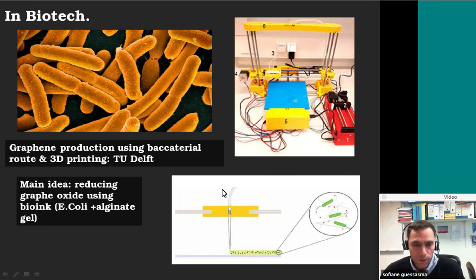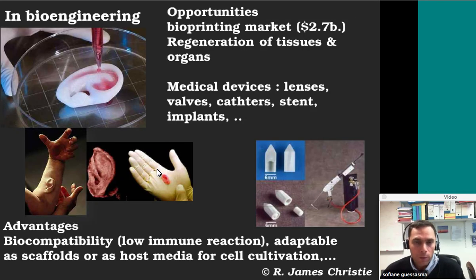It's also used for biotech. This is an example coming from TU Delft, where researchers used bacteria to manufacture graphene using a bio-ink, which is a combination of E. coli and alginate gel. In bioengineering, probably the biggest hit right now — the bioprinting market is estimated at $2.7 billion — with key interest in regeneration of tissues and organs, and the manufacturing of medical devices.